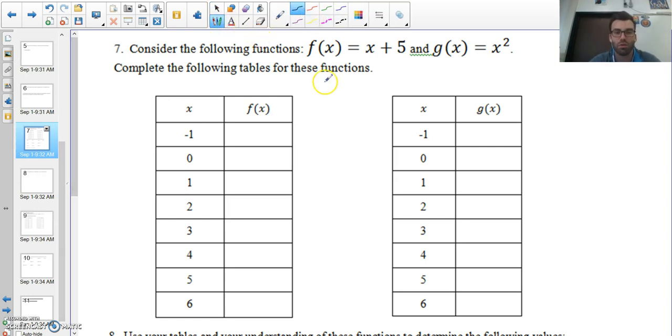For f of x, I have negative one. I plug it into my function for f of x, negative one plus five, you know is what? Oh yeah, it's four. And then fill it out for five, six, check it out. It's going up by one, seven, eight, nine, ten, eleven.